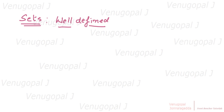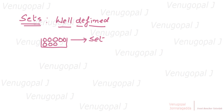Let me give you a few examples. Suppose there are eight eggs in a basket — you know there are eight eggs, and this is a well-defined set: a set of eight eggs. That's a simple example, but try to understand it. I'll give you a few more examples.